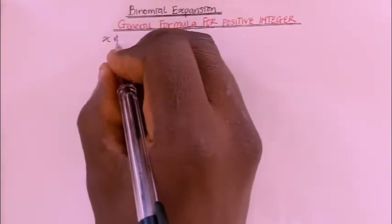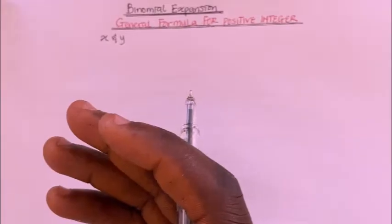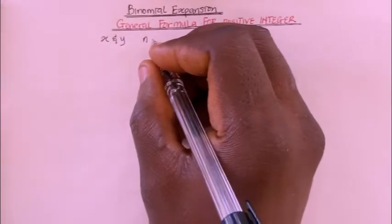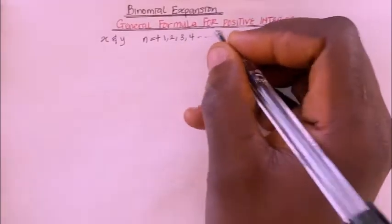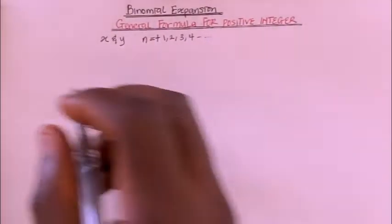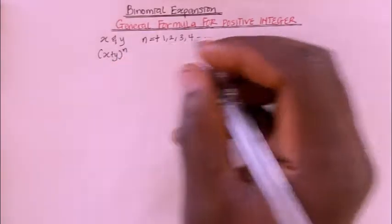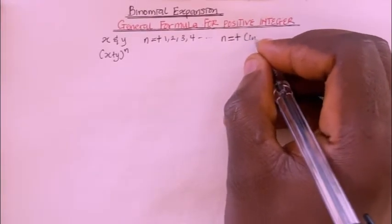Suppose we have two variables, x and y, and they are natural numbers. If x and y are natural numbers and the power of n is equal to 1 — that is positive, maybe positive 1, 2, 3, 4, and so on — then the following formula applies. Whenever you have x plus y all raised to the power of n, where n is a positive integer, this general formula holds.